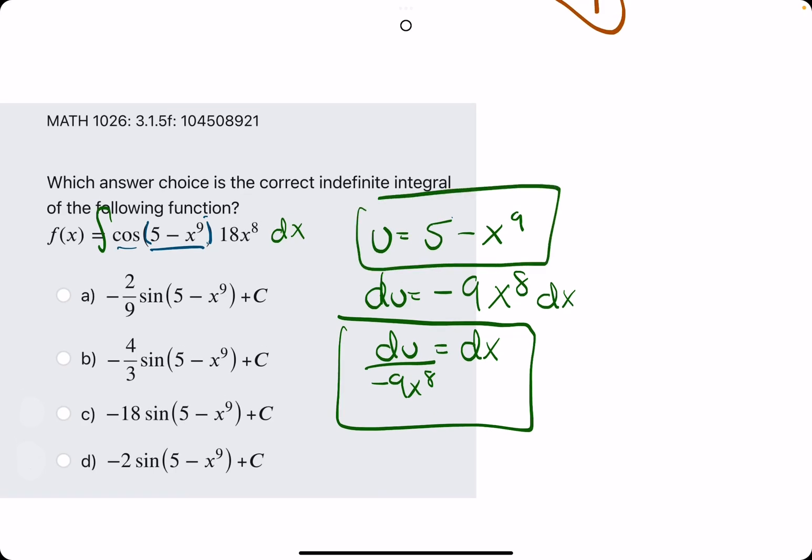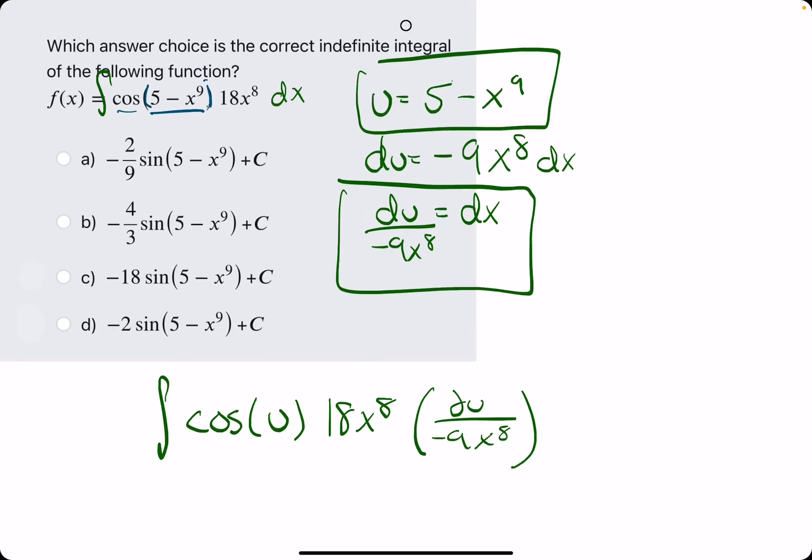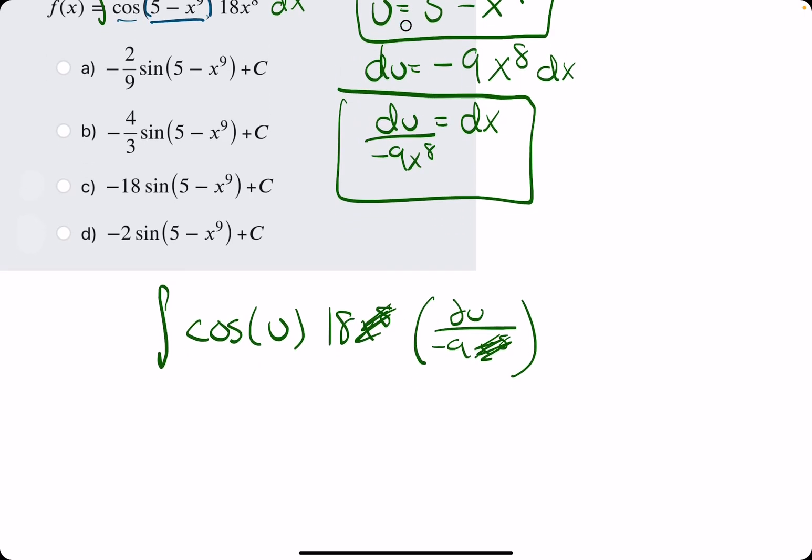Now we will sub in u and dx. We'll have cosine of u. Keep the 18x to the 8th. Plug in the du over negative 9x to the 8th in place of dx. We can cancel the x to the 8ths. We are left with 18 over negative 9, that is negative 2, and then cosine of u du. So let me take the antiderivative. We have negative 2, and then the antiderivative of cosine is sine.